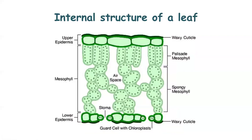Next is the internal structure of the leaf. When we observe the internal structure, it contains an upper epidermis with a waxy cuticle, followed by the mesophyll tissue. The mesophyll tissue is differentiated into palisade mesophyll and spongy mesophyll. Palisade mesophylls are relatively elongated structures, whereas spongy tissue has more intercellular spaces.